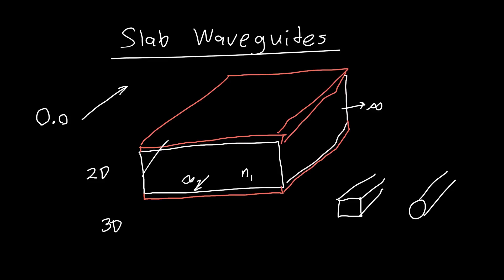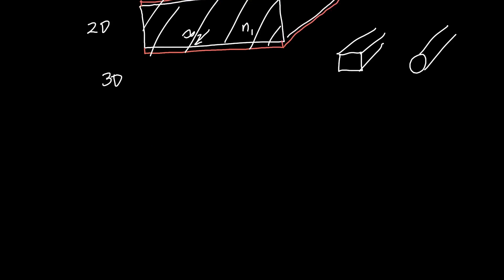We're just going to worry about the cross section of this slab waveguide, because it turns out this will tell us just about everything we want to know about how this thing behaves. I'm going to redraw that here. We've got the cross section of our slab, nice and straight, with a perfect mirror on the top and a perfect mirror on the bottom. This middle center region is some refractive index n1.